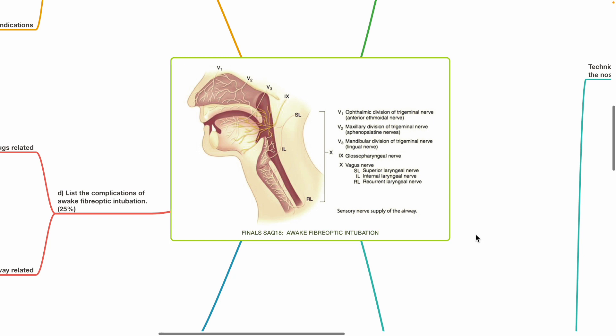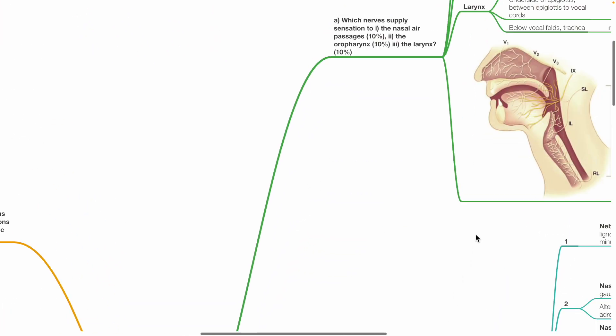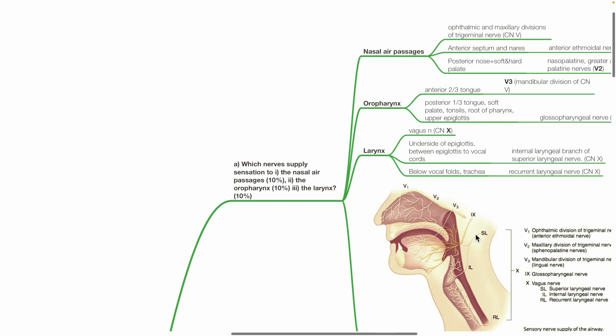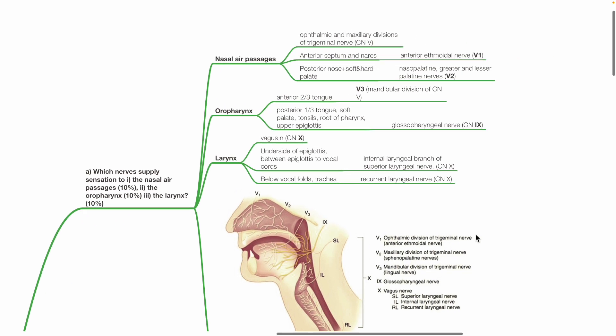Finos SAQ18 Awake Fibre Optic Intubation. A. Which nerves supply sensation to the nasal air passages, the oropharynx and the larynx?